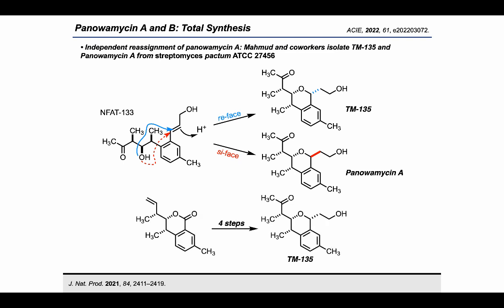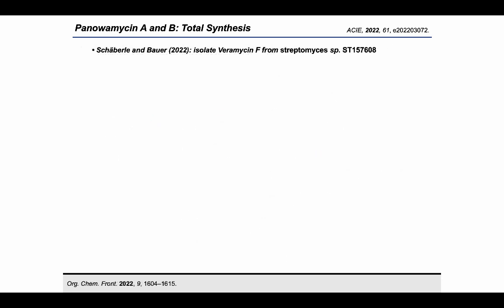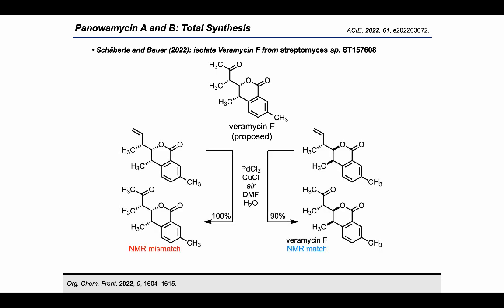Therefore, via the Wacker oxidation route to access panolamycin B, we had also synthesized TM-135. Serendipitously, a report from earlier this year by Schaberle and Bauer described the isolation of a related natural product, varamycin F. We identified that this natural product could be accessed rapidly from the isochromanone intermediate via the Wacker oxidation. Much to our surprise, the methyl ketone that we expected to correspond to the proposed structure of varamycin F was not congruent with the NMR spectra for the natural substance, suggesting the structure was misassigned. Fortunately, we had produced another diastereomer of the isochromanone as a result of the CH-insertion reaction. This isomer was subjected to the Wacker oxidation, and we were delighted to discover that this compound matched with the reported NMR spectra for varamycin F.